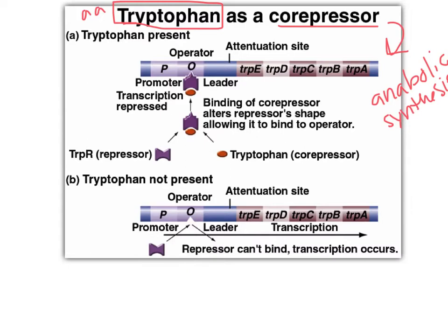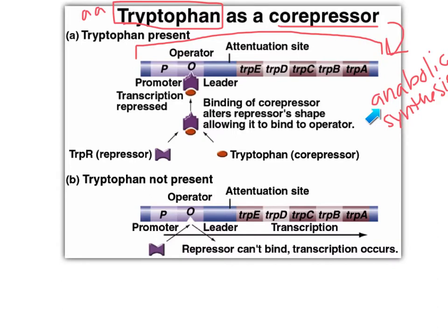So the tryptophan operon, as we see right here: promoter, operator, trpE, D, C, and BA — these are all the molecules needed in the biochemical pathway to build tryptophan.